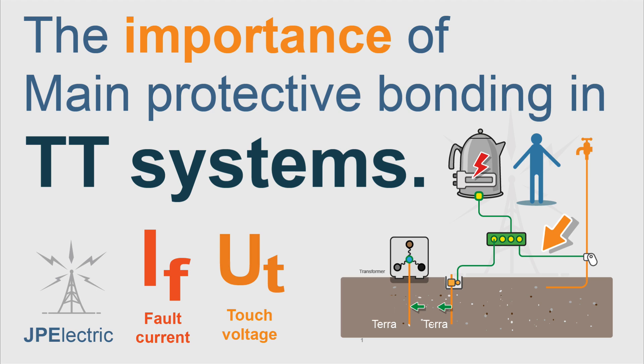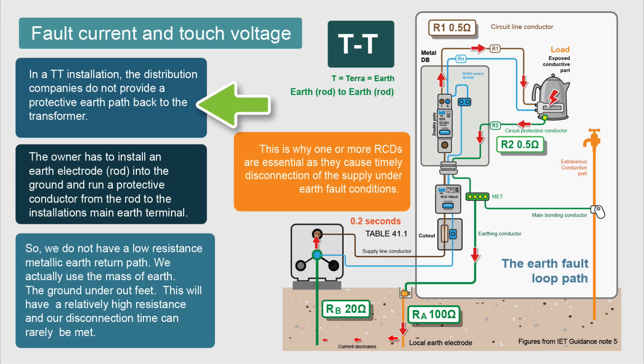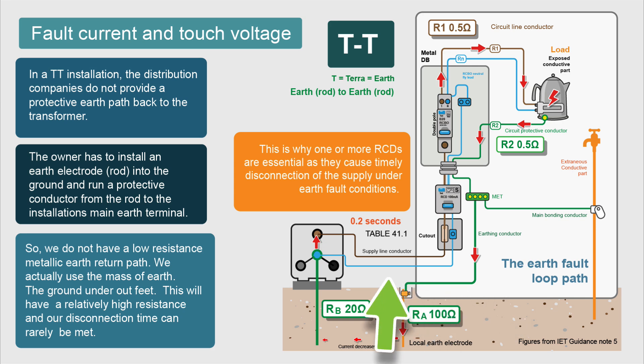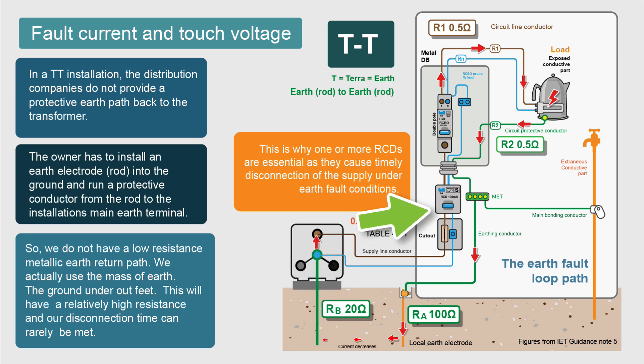Today I'm going to look at the importance of main protective bonding in TT systems. In TT installations, the distribution companies do not provide a protective earth path back to the transformer. The owner has to install their own electrode which they connect to their main earthing terminal. We don't have a low resistance metallic earth return path back to the transformer — we're using the mass of earth, and this earth return path has a higher resistance. This increases our earth fault loop impedance and disconnection times can rarely be met, which is why on TT systems it's essential that we have one or more RCDs protecting the installation, because the RCD is meeting our disconnection times.